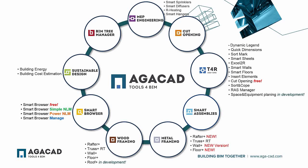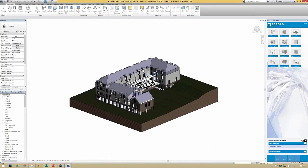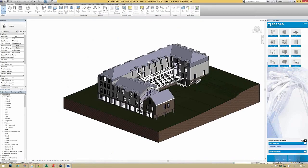We have a few solutions for sustainable design. Let's talk today about 12 tools called Tools for Revit. Let's switch to Revit. The first tool is called Smart Browser Free.